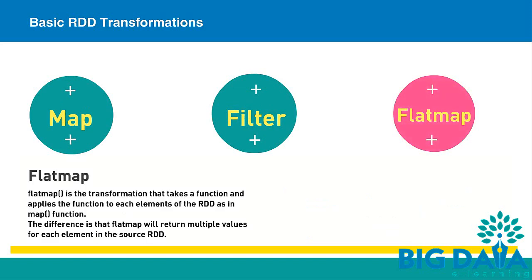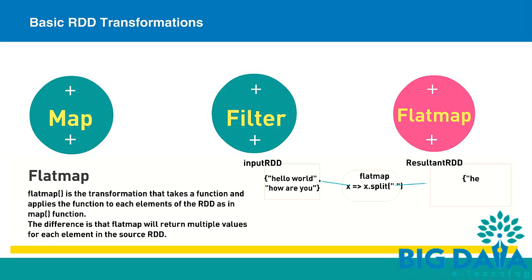Flat Map is a transformation that takes a function and applies the function to each element of the RDD, as in the map function. The difference is that Flat Map will return multiple values for each element in the source RDD. If input RDD contains the values "hello world" and "how are you", then applying a split function to Flat Map transformation will return an array of words: hello, world, how, are, you. Since Flat Map returns multiple values for each element, there are 5 elements in the resultant RDD, whereas the input RDD has only 2 elements.